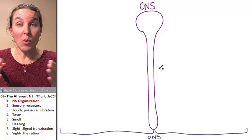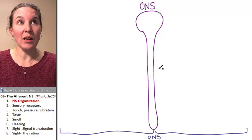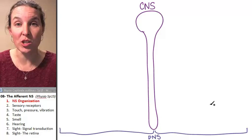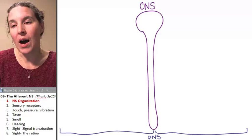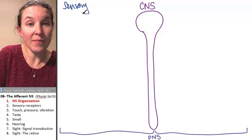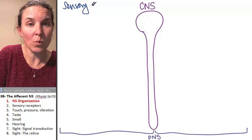The nervous system also has divisions based on the direction that information travels. Now, I am going to draw sensory or afferent pathways on my left side of my drawing.